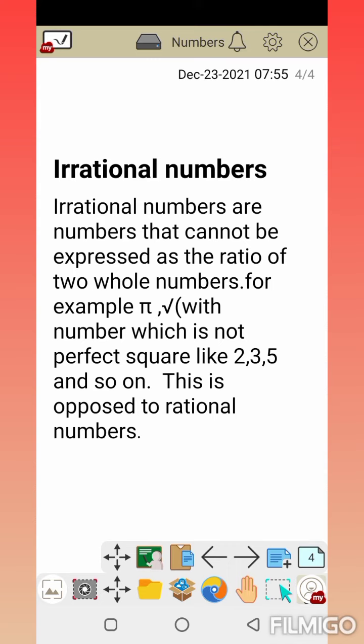These are not perfect squares, so we have irrational numbers. Irrational numbers are the opposite of rational numbers. Rational numbers are in P by Q form, while irrational numbers are not in P by Q form.